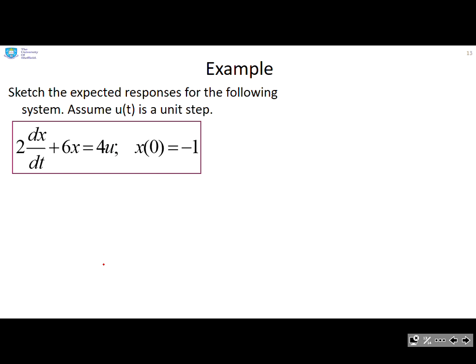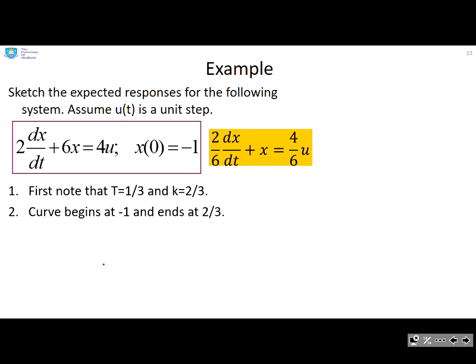So let's do an example. Sketch the expected responses for the following system, assuming that u(t) is a unit step, that is 1. So first I put it into time constant form. And so you can see that T is 1/3 and k, or capital C, is 2/3. Now the curve begins at minus 1, I can see that here, I'm given it, and it finishes at the steady state, which is 2/3. So those are two points that I can write down straight away.